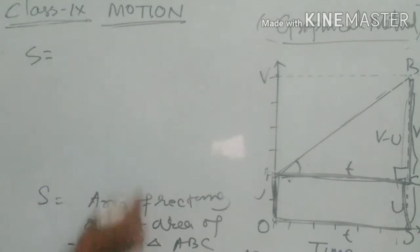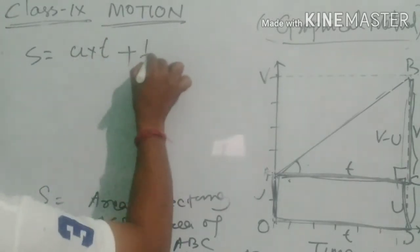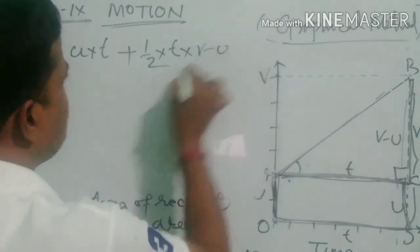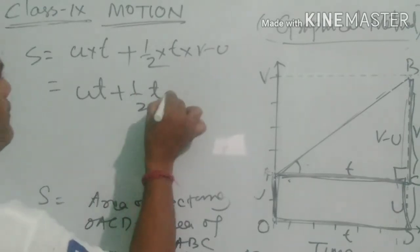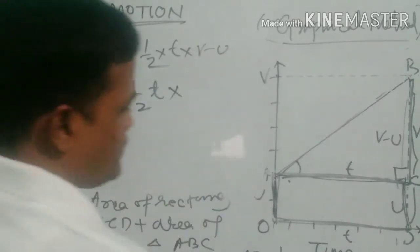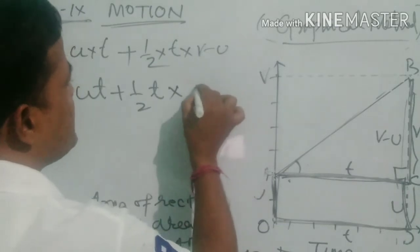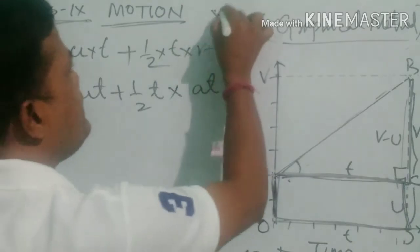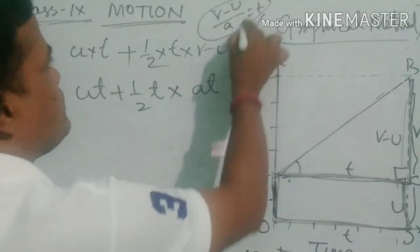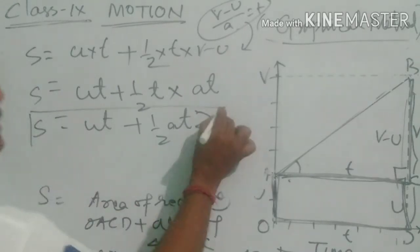Now, S = OA × AC + ½ × AC × BC. Since OA = u and AC = t, we get S = ut + ½ × t × BC. BC = v - u, and since we know v - u = at, substituting gives S = ut + ½ × t × at = ut + ½at². This is the second equation of motion.